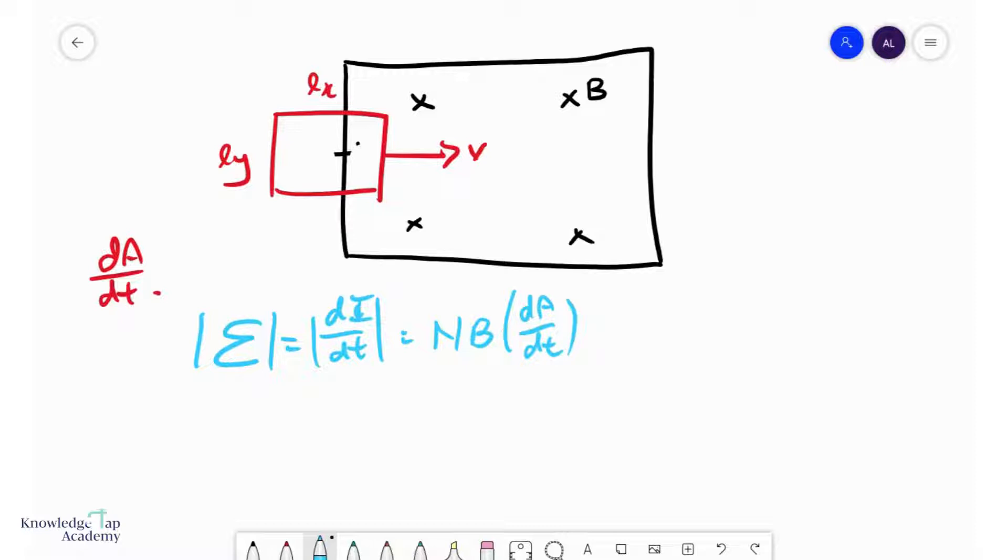Notice that I ignore the theta because this coil is always perpendicular to the field. So, there's no need to do any cosine theta here. So, I pulled out the B because the B is constant. It is the area that is changing. And what we can do, we can write this as N*B*d(Ly*Lx)/dt.